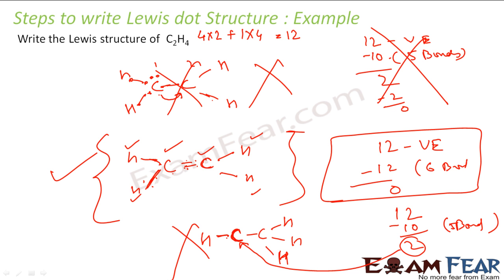So you can start with any structure, but if you end up in a situation where everybody is not happy, then you have to redesign. For example, we started with the single-bond structure, found a place where atoms are not happy, redesigned to a double-bond structure, and found that everybody is happy — that means we got the correct structure.